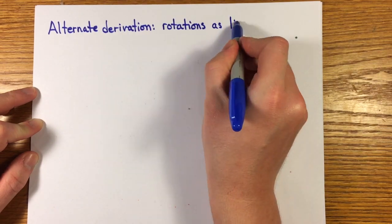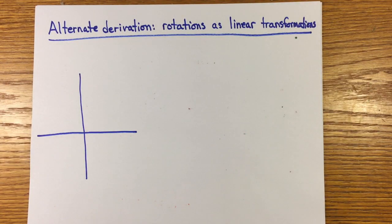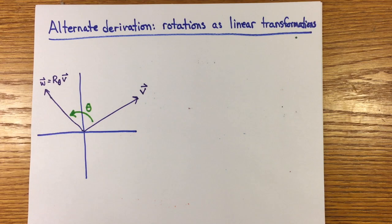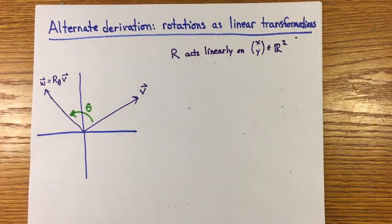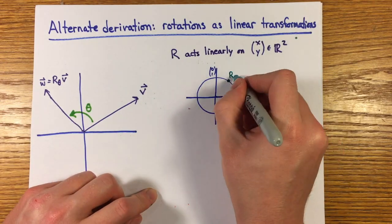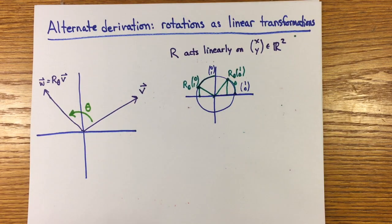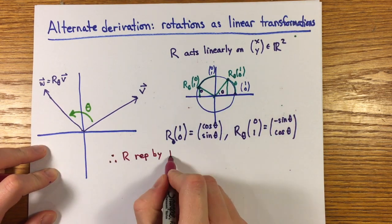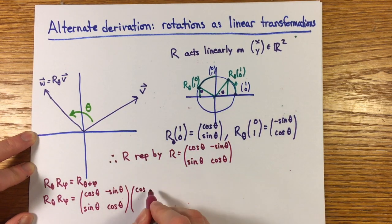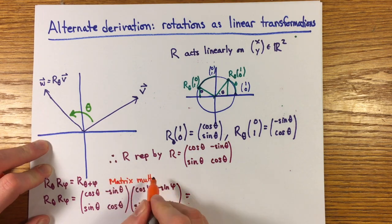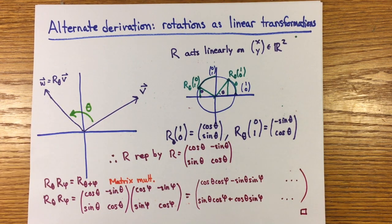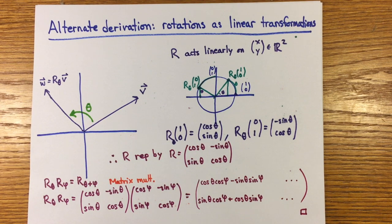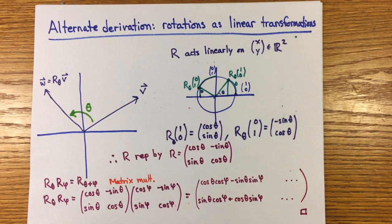There are other ways to prove the angle addition formulas. If you're willing to develop the theory of rotations of the plane and believe that rotation by θ and then φ is rotation by θ+φ and you establish that these transformations are linear and so can be represented by matrices whose columns give the images of the standard unit basis vectors and whose composition is given by matrix multiplication, then you get your angle addition formulas right from there. This theory is usually treated in a linear algebra class and is probably overkill for establishing the properties of trig functions.